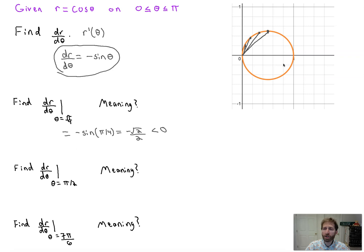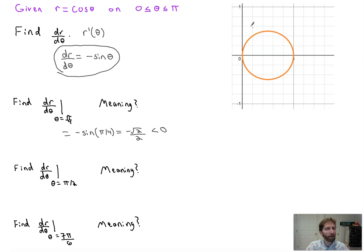The meaning is twofold: you could say r is decreasing, or you could say that the distance that the curve is away from the origin is getting smaller. That's also because r is positive as well. But for right now, that means the rate of change of r is negative — r is decreasing.